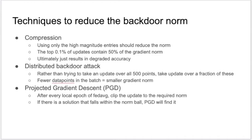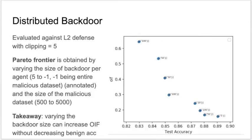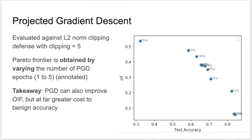We also try using projected gradient descent to directly reduce the norm of the update. This plot shows the Pareto frontier of the distributed backdoor attack evaluated against the L2 norm clipping defense with the same parameters used earlier. We vary the size of the backdoor and the number of points we are trying to misclassify, and see a curve emerge where we do better than previously without the distributed backdoor attack. The projected gradient descent attack, while not as effective as distributing the backdoors among different clients, still improves the outsized impact factor compared to the standard model poisoning attack.